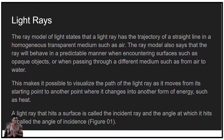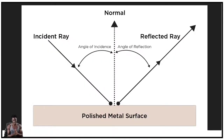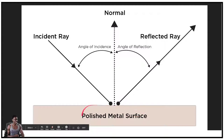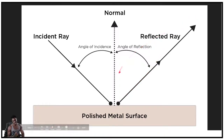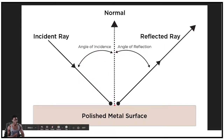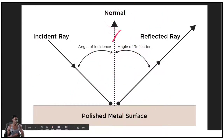This makes it possible to visualize the path of the light ray as it moves from its starting point to another point where it changes into another form of energy such as heat — if you leave light on anything for a while, it starts to get a little hot. A light ray that hits a surface is called the incident ray, and the angle at which it hits is called the angle of incidence. When a light ray comes in from a lamp or the sun, it hits a polished metal surface and bounces right off. Some of that light is absorbed as heat and the rest is reflected. The average of the incident and reflected ray gives us our normal information. That's where we get our normal information from in 3D.